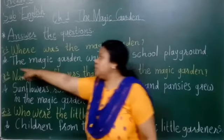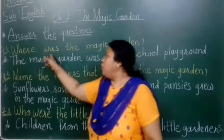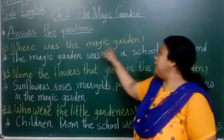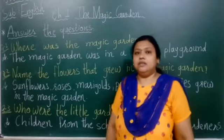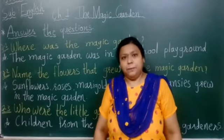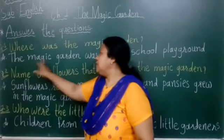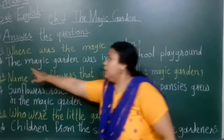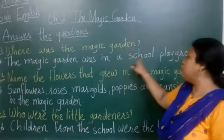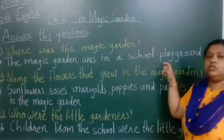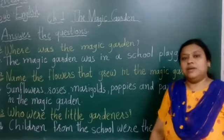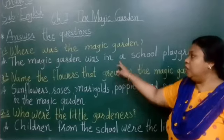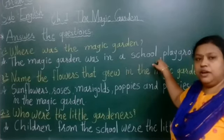Now we will start our first question: Where was the magic garden? Magic garden kahan pe tha? The answer is: the magic garden was in a school playground. Jho magic garden tha, woh school ke playground mein tha. The magic garden was situated in the school's playground.